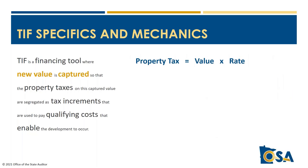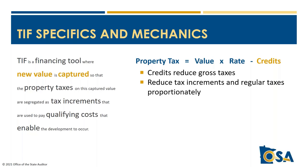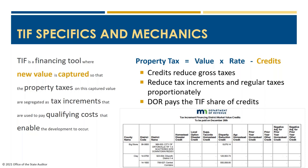There's one more mechanical piece: property taxes are not just value times rate — there are also credits that reduce the gross tax to what the taxpayer actually pays. The gross tax includes both tax increment and regular taxes, so a credit proportionally reduces both. Most credits don't apply to the types of property usually found in TIF districts. The Department of Revenue reimburses jurisdictions for TIF credit amounts; for 2020 they listed only 11 districts in eight counties with generally quite small amounts.